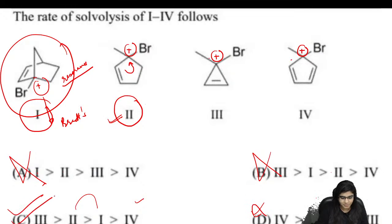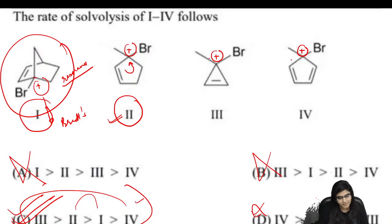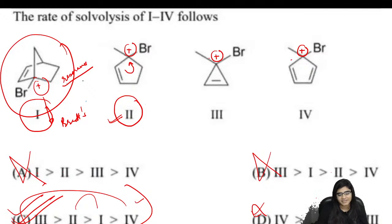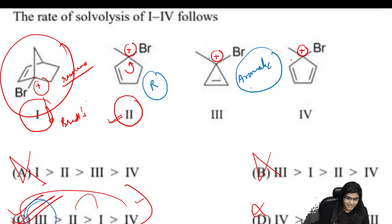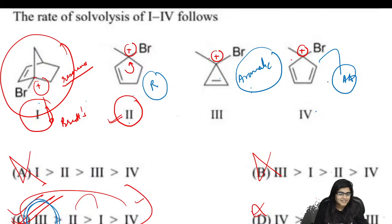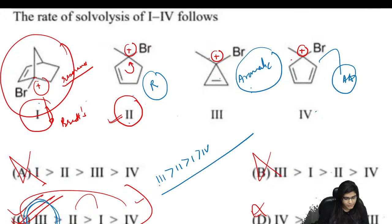The correct answer is option C. For compound 1 (bridgehead): no resonance due to Bredt's rule, no hyperconjugation. For compound 2: resonance is present. For compound 3: the compound is aromatic in nature — most stable, maximum rate of solvolysis. For compound 4: it is anti-aromatic — a destabilizing factor. So the correct order is: 3 > 2 > 1 > 4. The correct answer is option C.